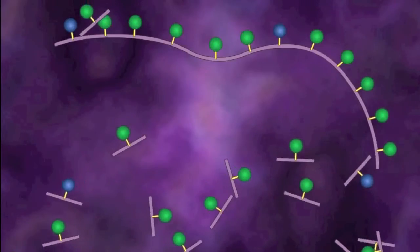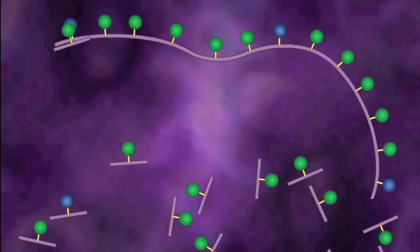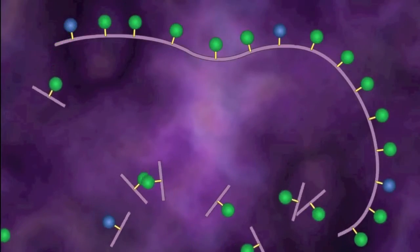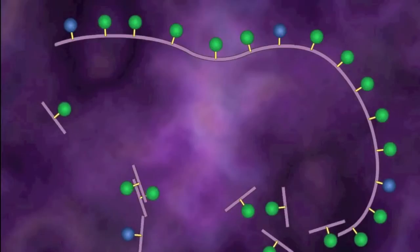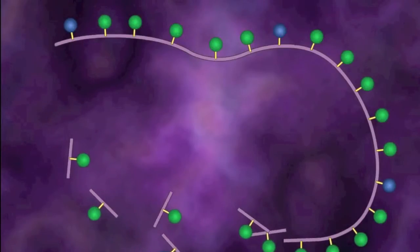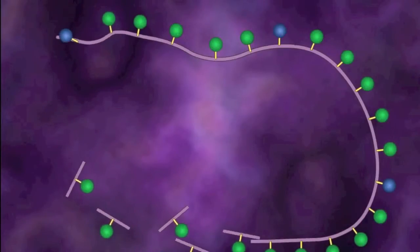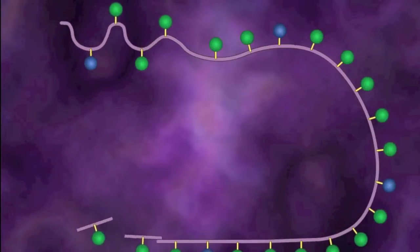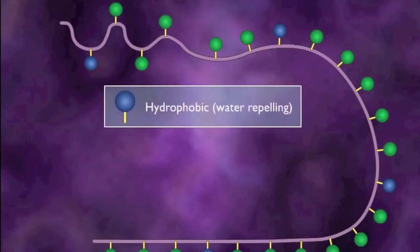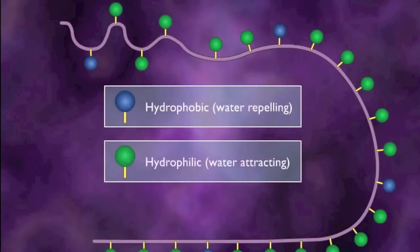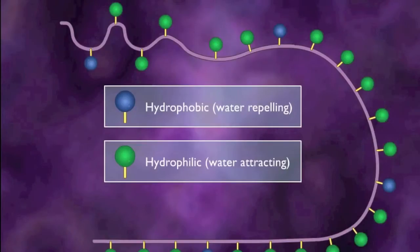Primary structure is the peptide bond between individual amino acids that creates a long chain of connected amino acids. These long chains of polymerized amino acids have hydrophobic, water-repelling, and hydrophilic, water-attracting, projections that are oriented perpendicular to the chain, as shown in this illustration of a growing protein chain.